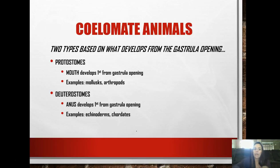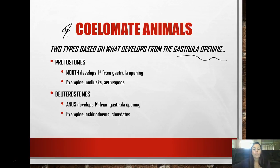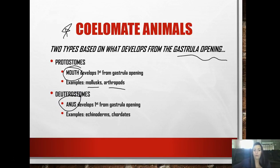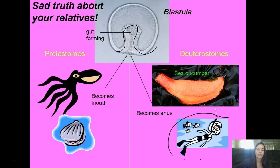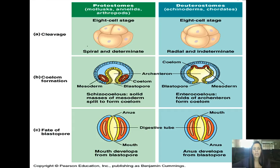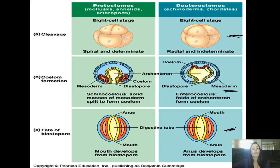Coelomate animals can be two types based on what develops from the gastrula opening. You can either be a protostome or a deuterostome, and the only difference is what develops first from that opening. In protostomes, the mouth develops first - examples are mollusks and arthropods. In deuterostomes, the anus develops first - examples are echinoderms and chordates like us. All of these animals have an anus and a mouth, but the difference is which one develops first.